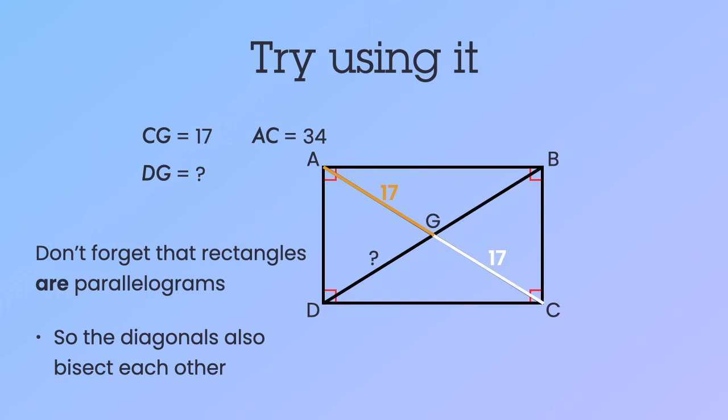But since it is a rectangle, the diagonals are congruent, so BD is also 34. And now that we know BD is 34, that's the diagonal. We know G is the midpoint of that diagonal. So DG is halfway across for 17.